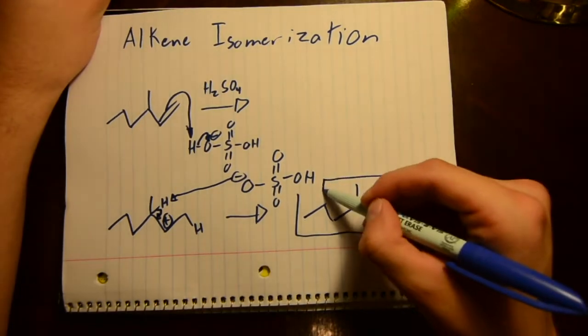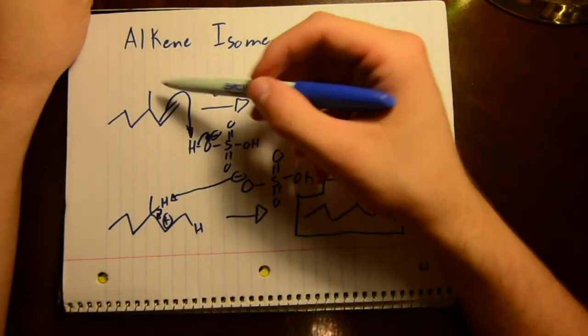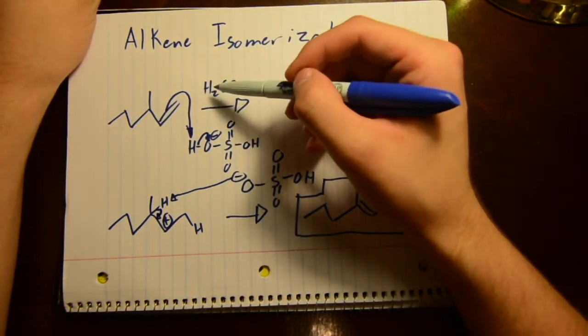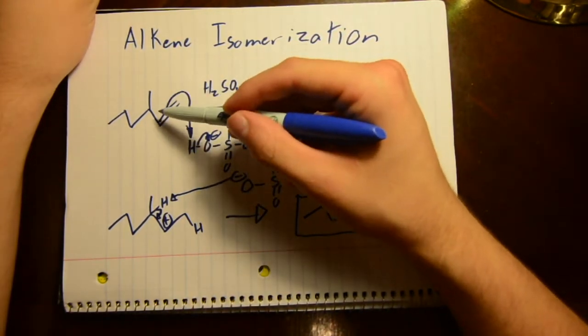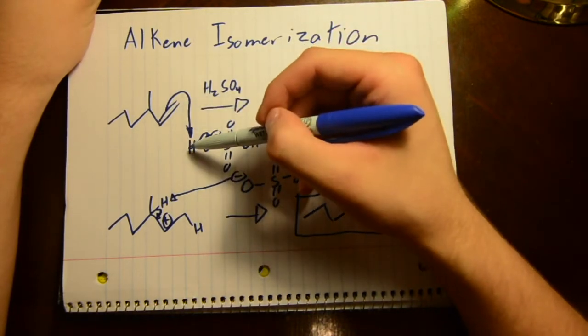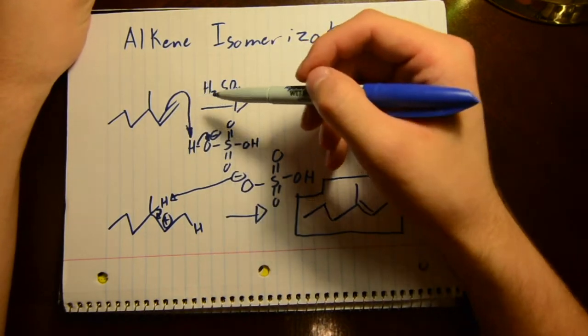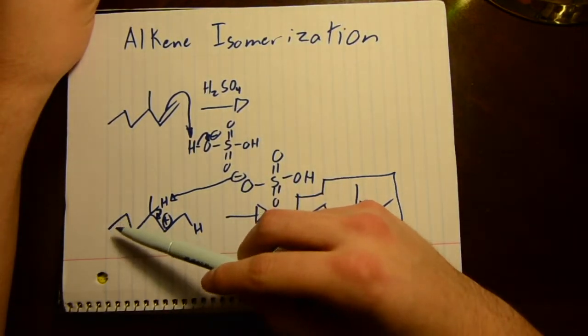So ultimately you have some type of alkene, and an acid comes in. The alkene with the double bond takes the H and brings it back to the least substituted carbon.